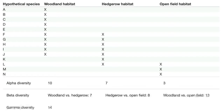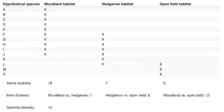In woodland there are about 10 species, in hedgerow there are about 7, and in open field there are about 3. These are the species found in these three regions. Alpha diversity refers to the species found in a particular habitat — so woodland alpha diversity is 10, hedgerow is 7, and open field is 3.